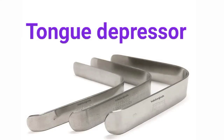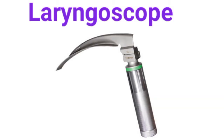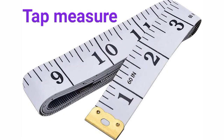A tongue depressor is used to examine the mouth and throat. A pharyngeal retractor is used to examine the pharynx. A laryngoscope is used to examine the larynx. A tape measure is used to measure chest circumference, height, and abdomen.